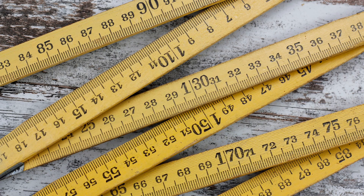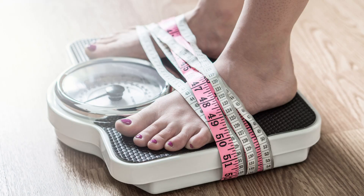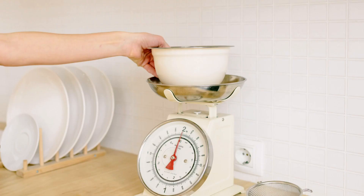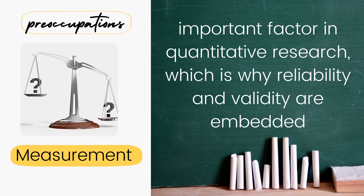It's very easy to measure things that already have their measurements. Another example is if you want to determine height and weight — there are already standard measures for that. We already have feet, the metric system, kilograms, and pounds. It is very easy to look into measurements of things that already have a scale or a standardized measure.